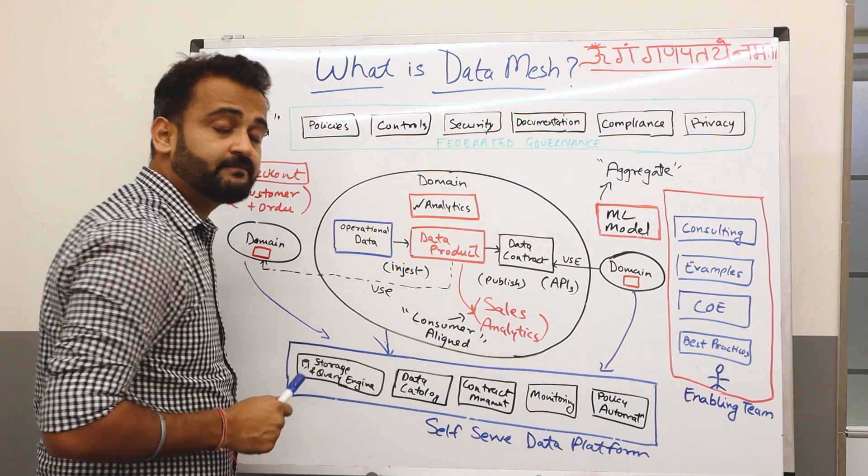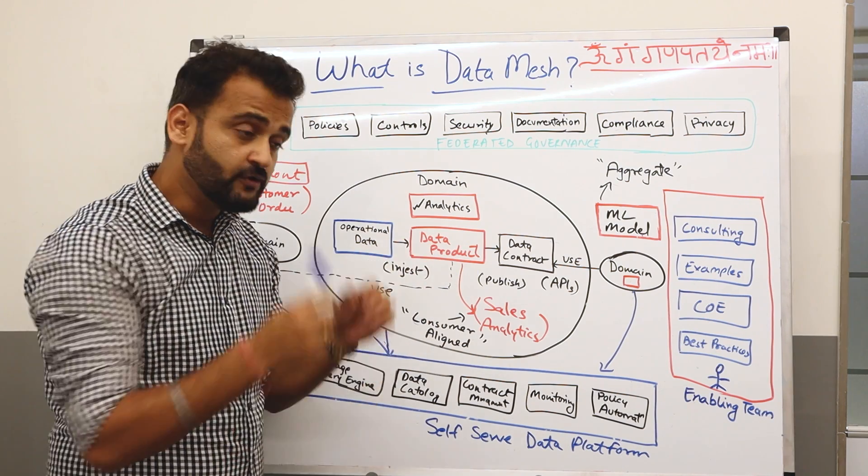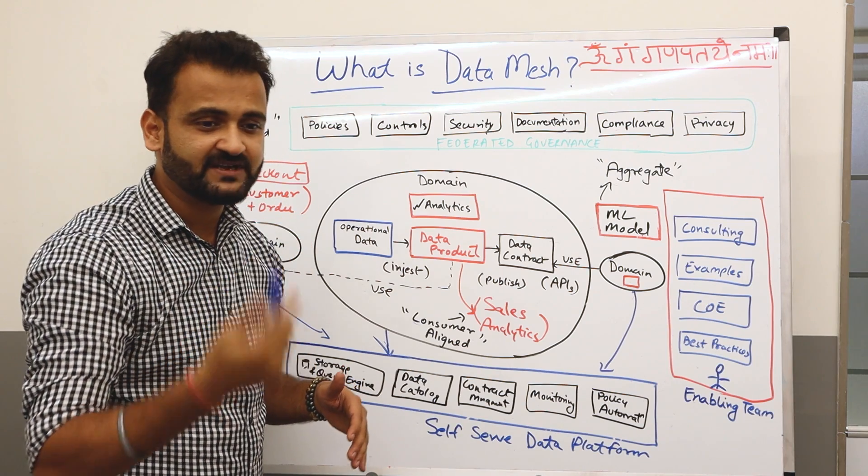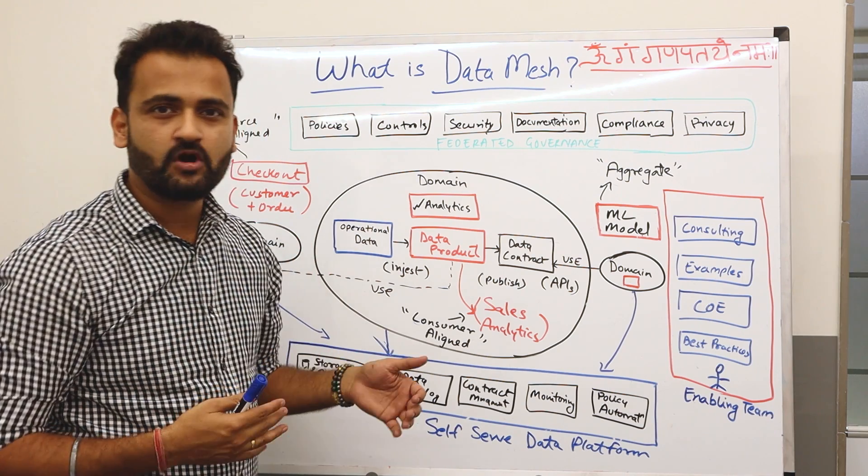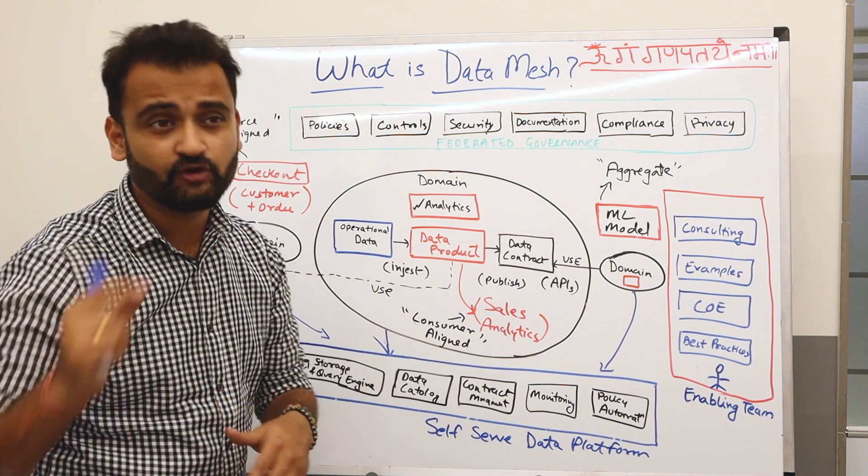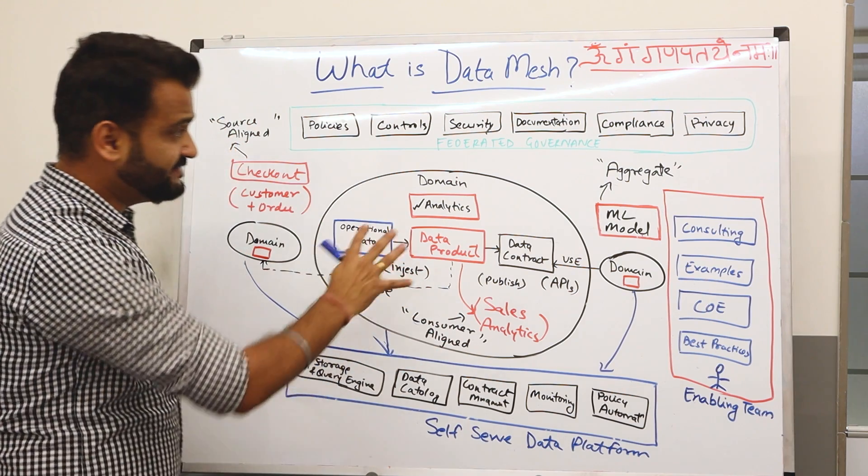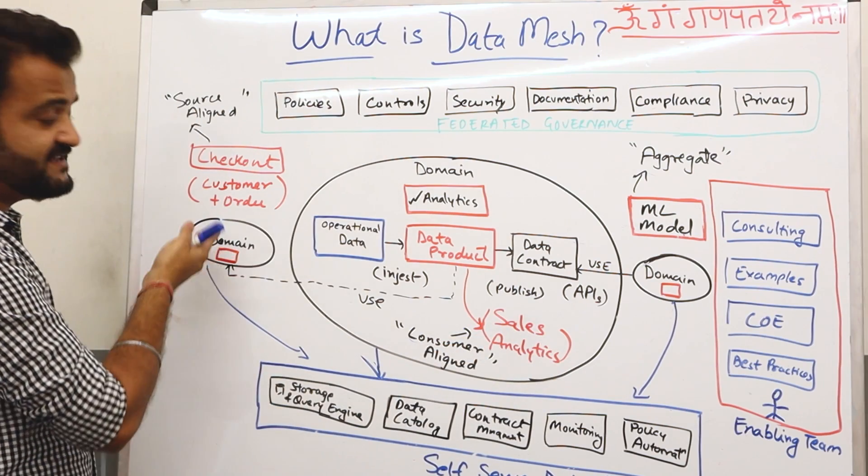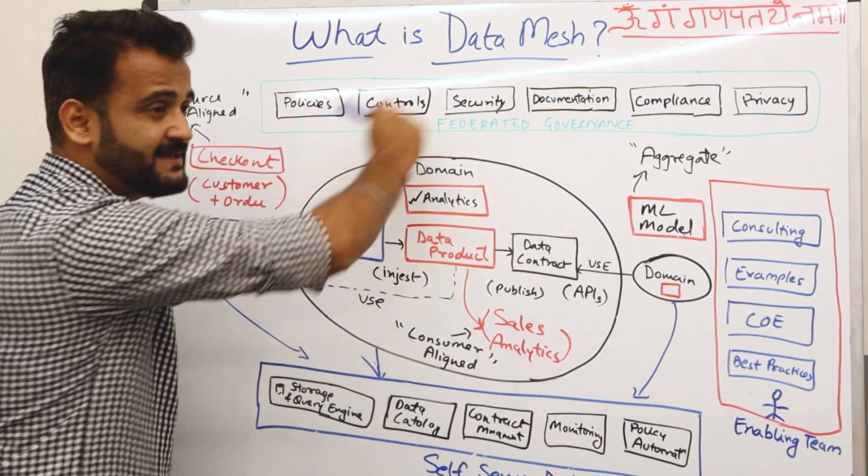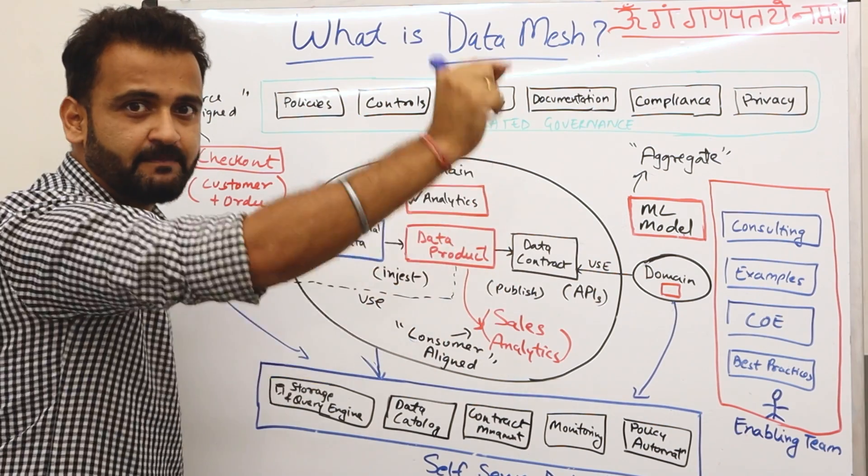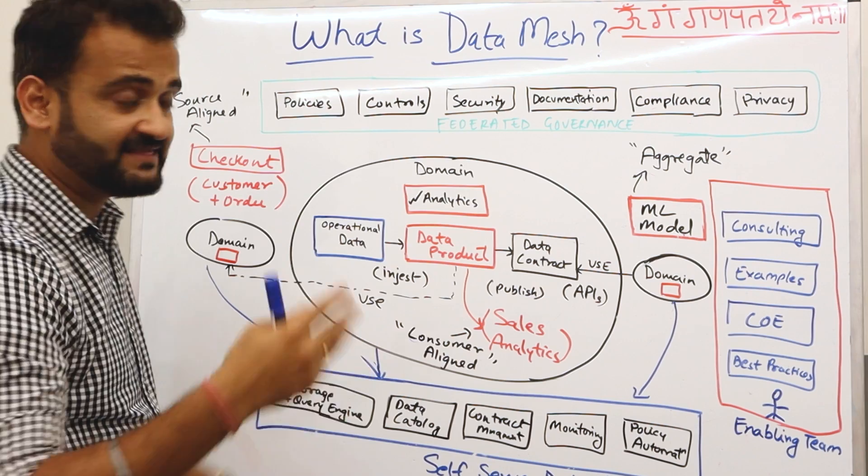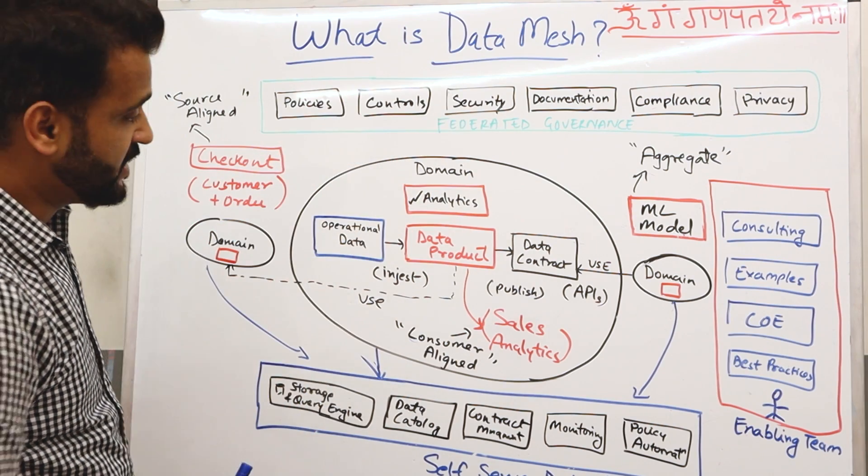And if any other domain wants to consume it, as you can see, they have to read the contract and if they agree they can use it. It will also outline the kind of data, the level of data you have. Sometimes the data maturity is not that much, so you need to say that okay, this data is not that mature for this particular use case. And then this particular domain might be taking something from another domain to build this data product. So you can imagine these kind of zigzag meshes across domains talking to each other, and that's why it is called Data Mesh.